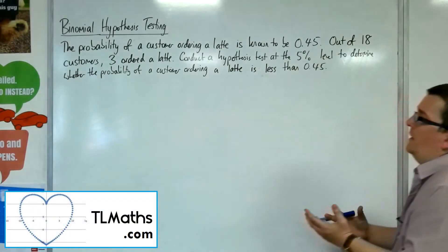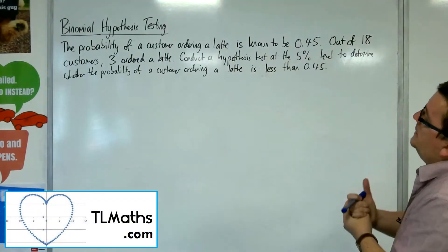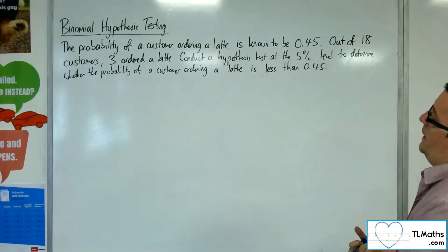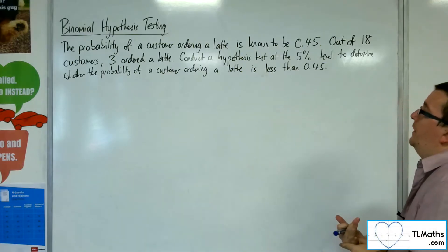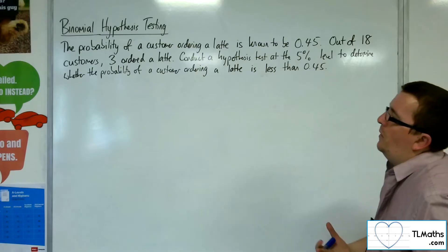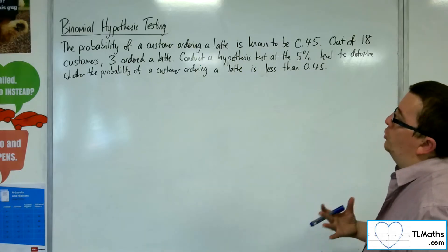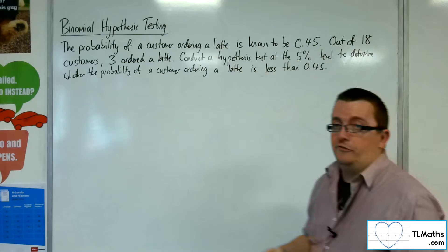The probability of a customer ordering a latte is known to be 0.45. Out of 18 customers, 3 ordered a latte. Conduct a hypothesis test at the 5% level to determine whether the probability of a customer ordering a latte is less than 0.45.